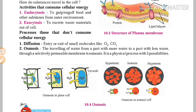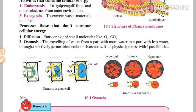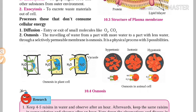Processes that do not consume cellular energy include diffusion and osmosis. Diffusion means the entry or exit of small molecules like oxygen or carbon dioxide, traveling from outer to inner or inner to outer without consuming energy. Osmosis means the movement of water from a region of higher water concentration to lower water concentration through a selectively permeable membrane. It is a physical process with three possibilities.